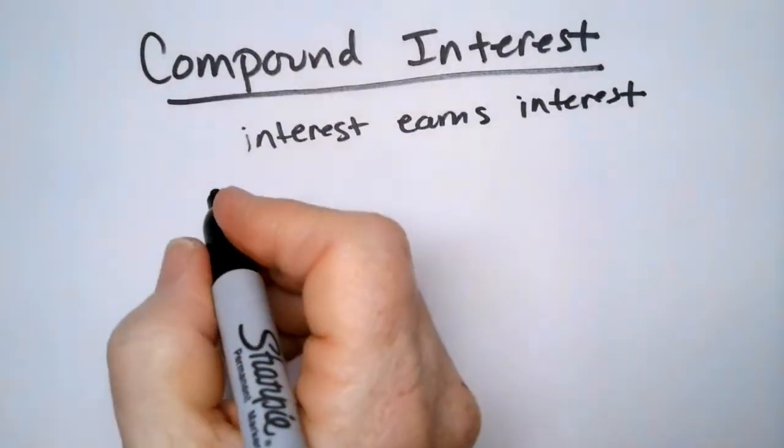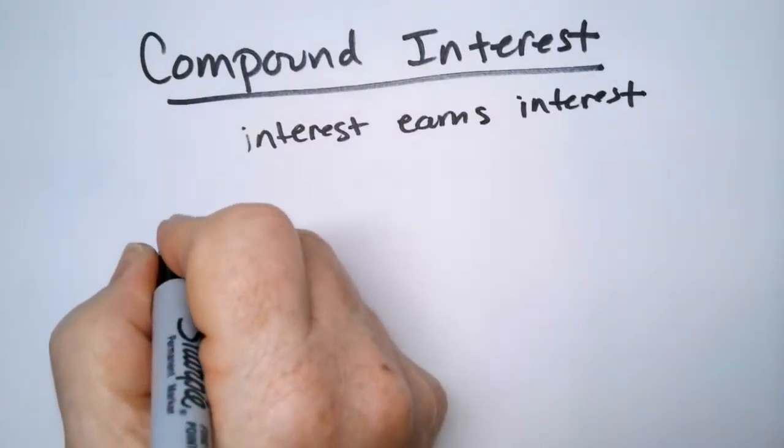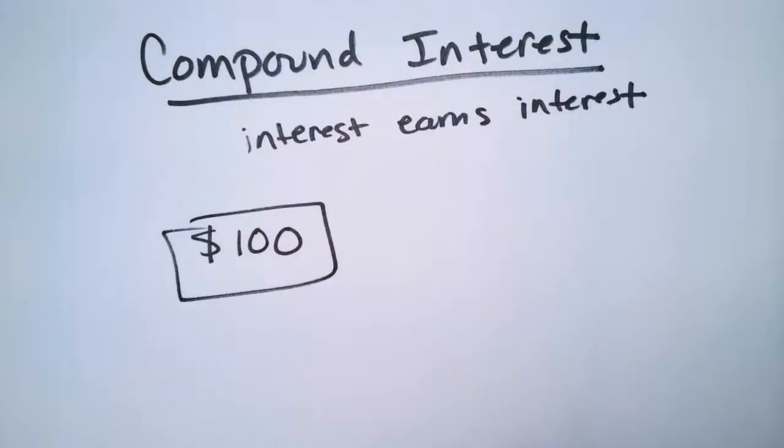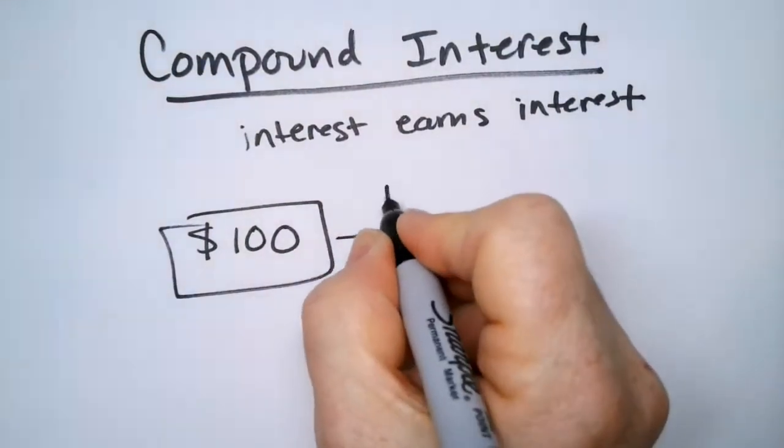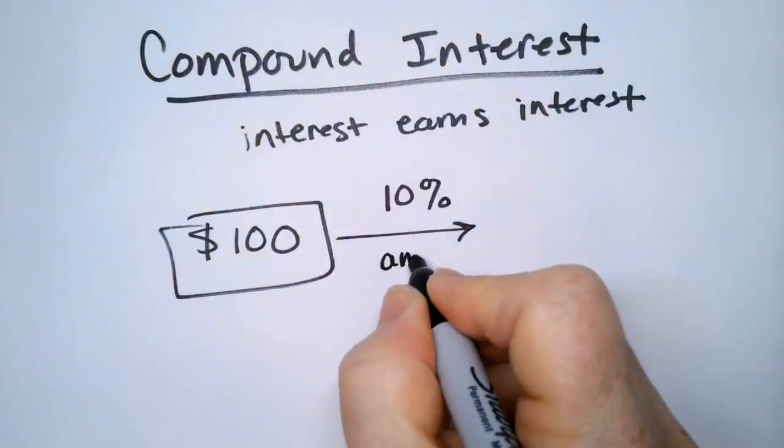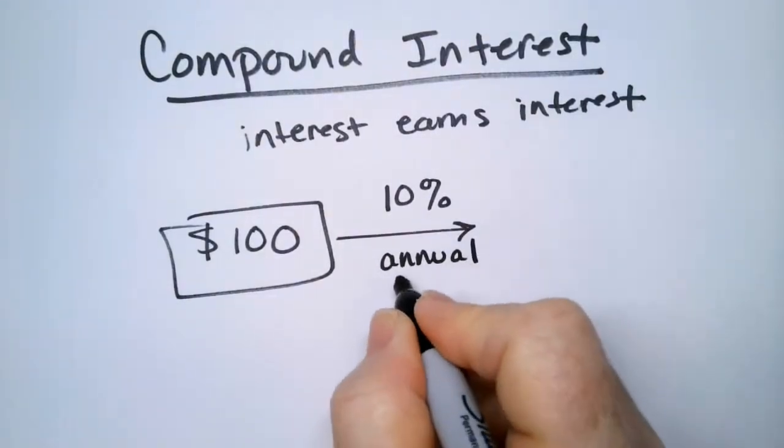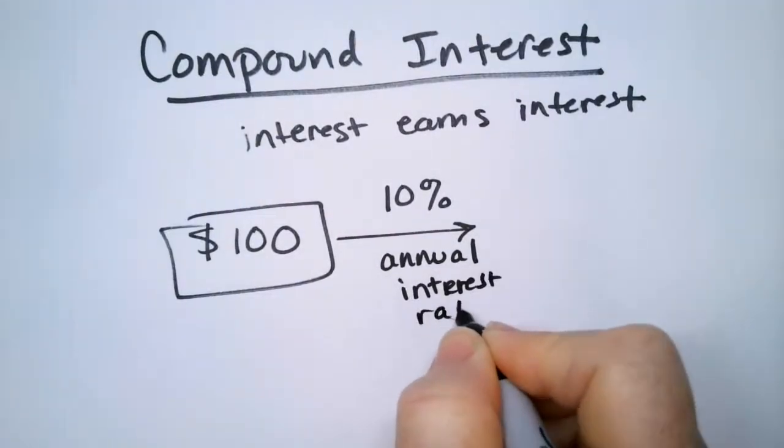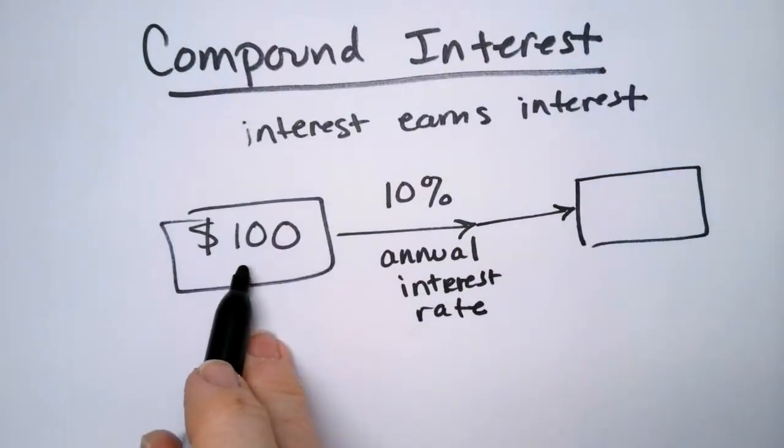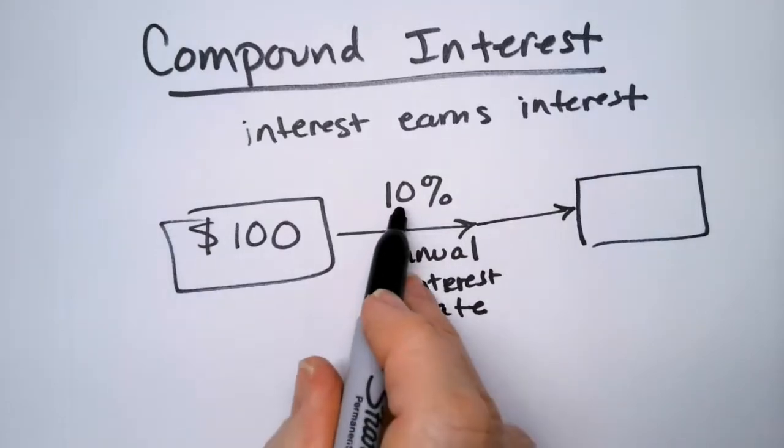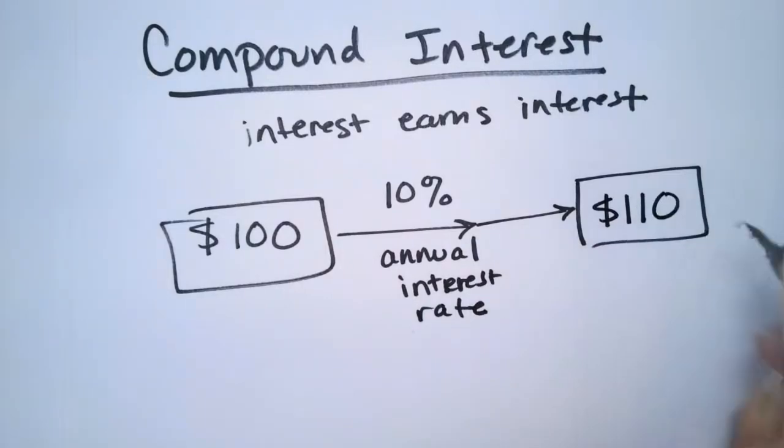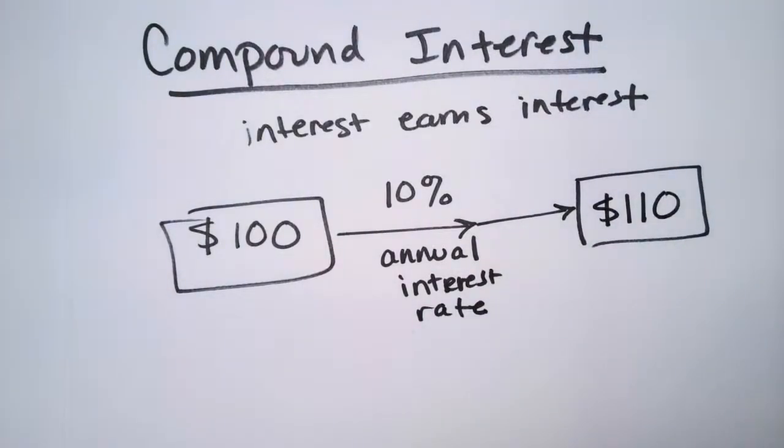Say for example that you invested, if we have $100 in the bank, we put $100 in the bank and it has a 10% interest rate, an annual interest rate. Annual means yearly interest rate. At the end of one year, you will have $100 plus whatever you got in interest. You got 10%, 10% of 100 is $10. So at the end of the year you'll have that much in your bank. Good so far?